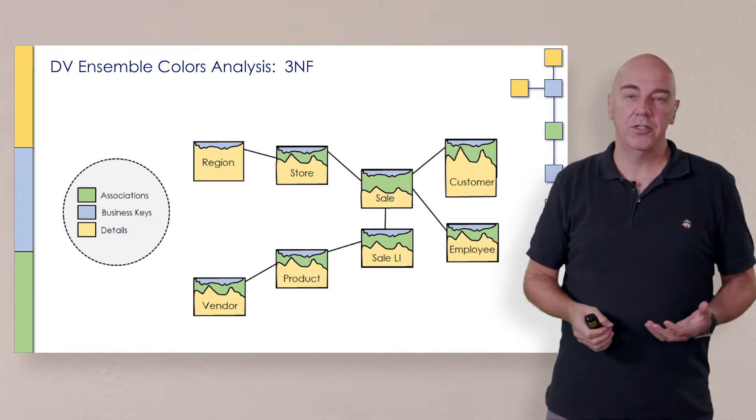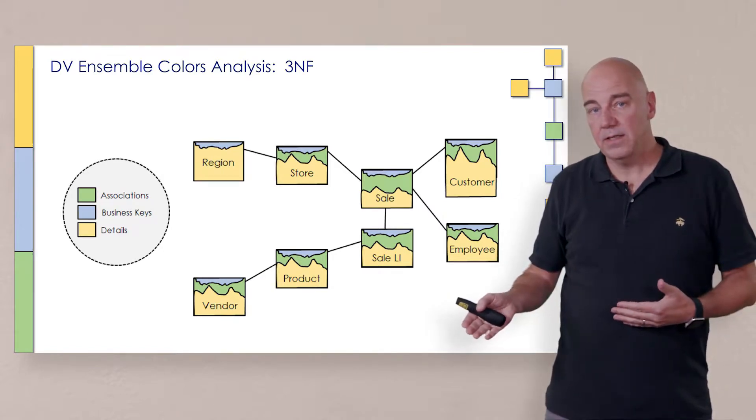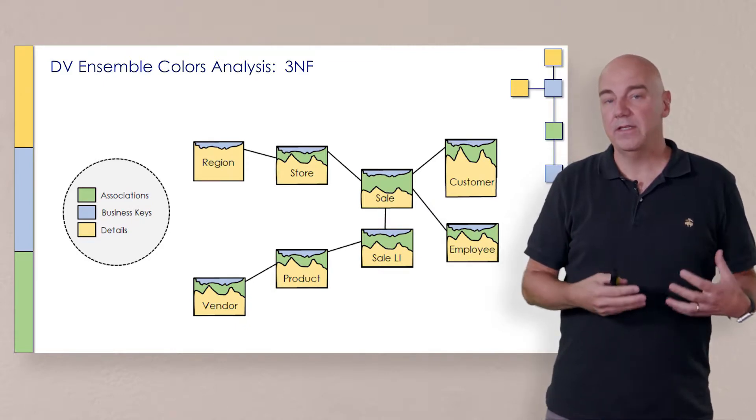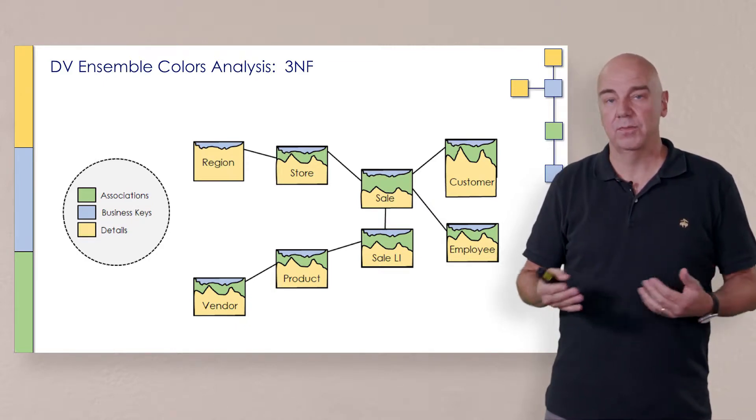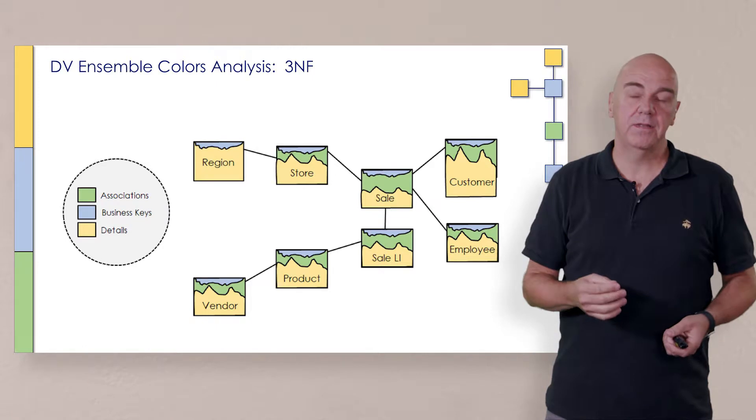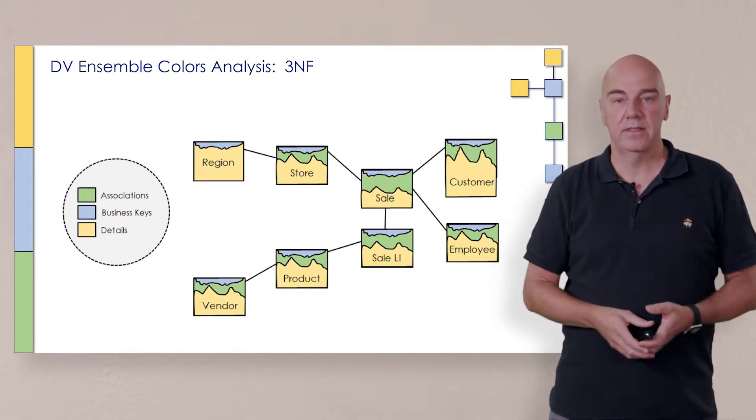So in this case, the associations or relationships are green. The things that are keys or identifiers or instances are blue. And the things that represent the context that describe things is yellow.